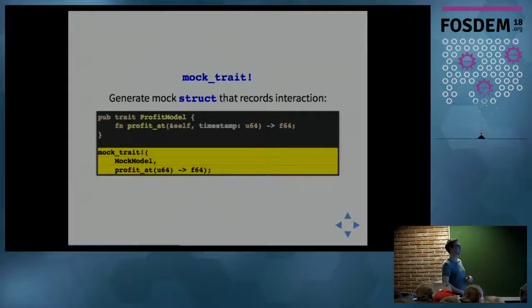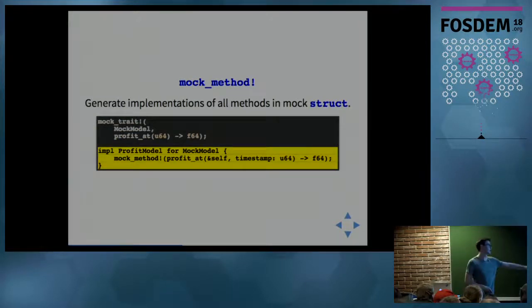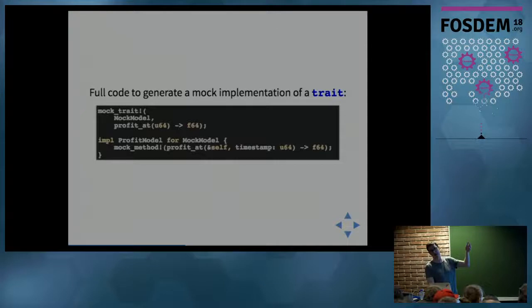We have to explicitly tell the Rust compiler that the mock model implements the profit model trait. So we have impl profit model for mock model. Then we have the mock method macro inside it, which will generate the actual real profitAt function, which calls our internal struct. That's all the code you need to generate a mock that has all the features I'm about to explain.